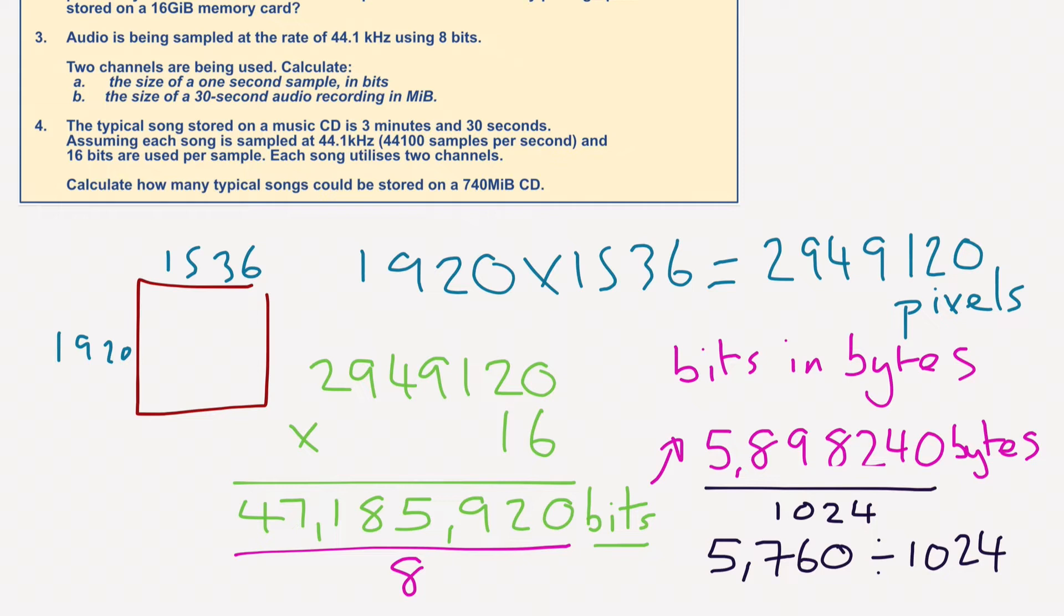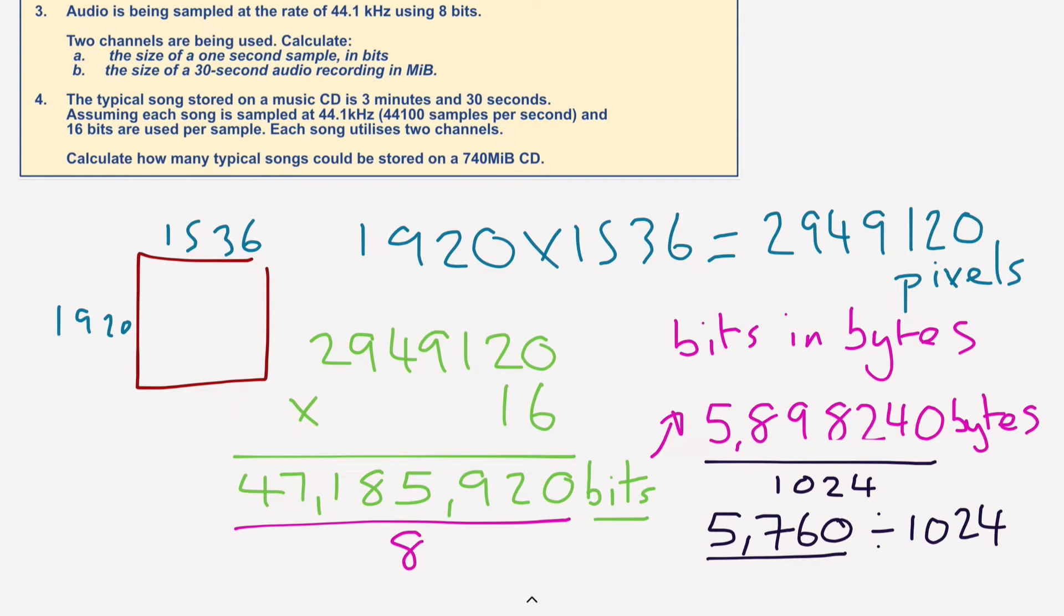And then we're going to divide that again by another 1024 to turn it into megabytes. So at the moment, it's in kilobytes. Now we're going to turn it into megabytes. So in order to do that, we're going to divide it again by 1024. And we should get a total of 5.625 megabytes. And that is your answer. So that's the first one done.